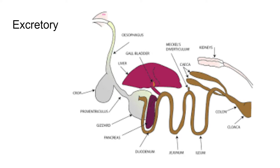For the excretory system, birds have a metanephric kidney and a common opening for excretion and reproduction called the cloaca. They have no bladder, so their urine is semi-solid — they convert urea into a substance called uric acid, which is like a paste. The purpose of a bladder in mammals is to hold urine for marking territory; birds don't need that, so they simply go whenever necessary.